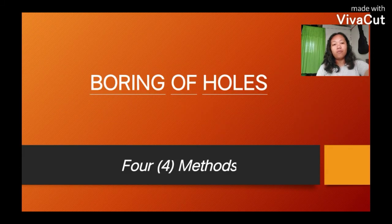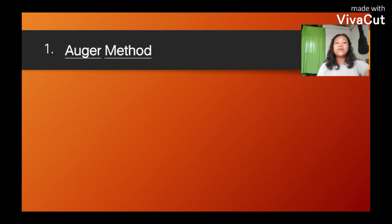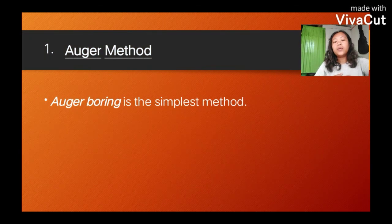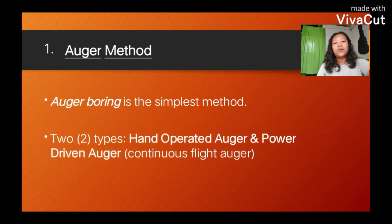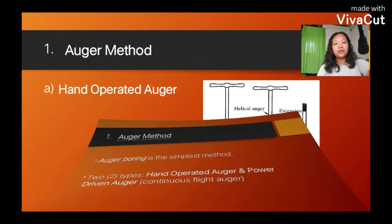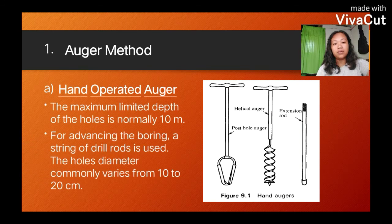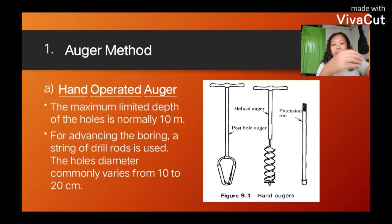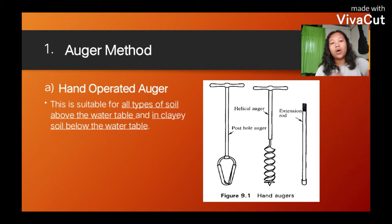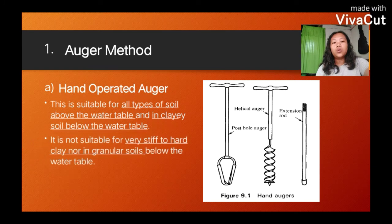Here are the four methods of boring holes. First, the auger method. Auger boring is the simplest method, and it has two types including hand-operated and power-driven auger. For hand-operated auger, the maximum limited depth of holes is normally 10 meters. For advancing the boring, a string of drill rods is used. The hole diameter commonly varies from 10 to 20 centimeters. It is suitable for all types of soil above the water table and in pile soil below the water table, but not suitable for very stiff to hard clay or in granular soils below the water table.